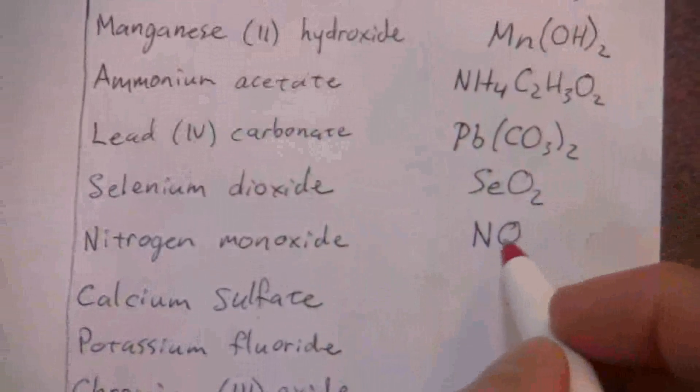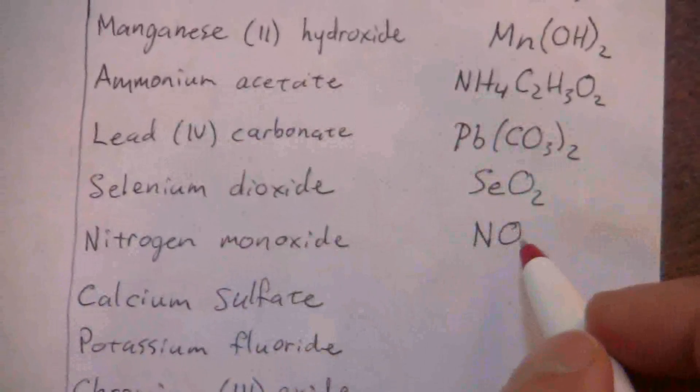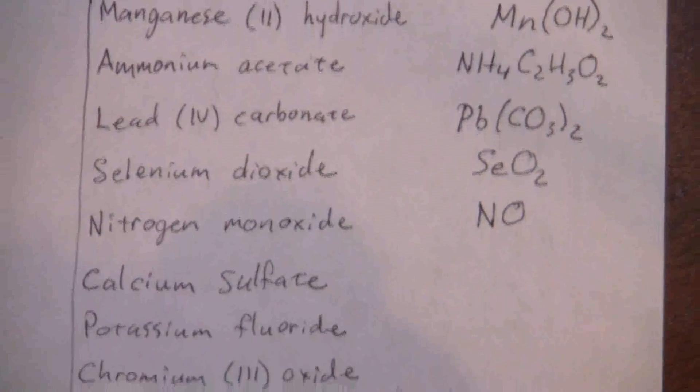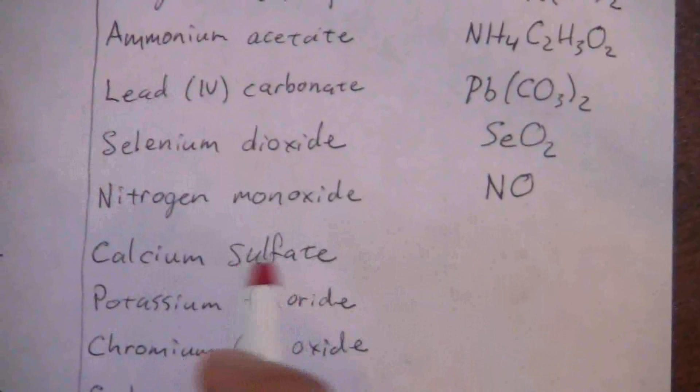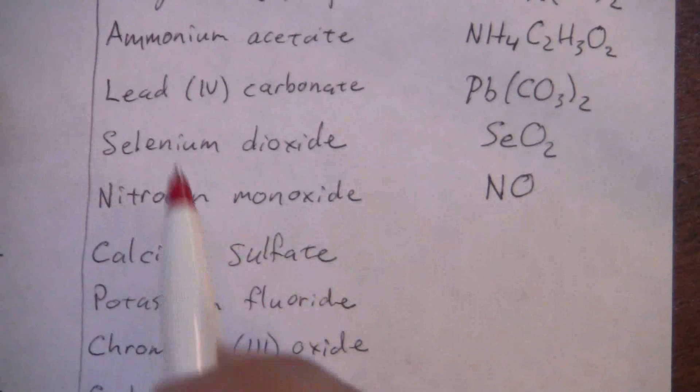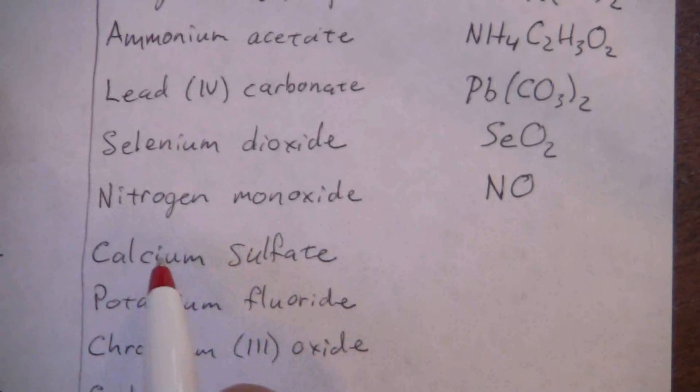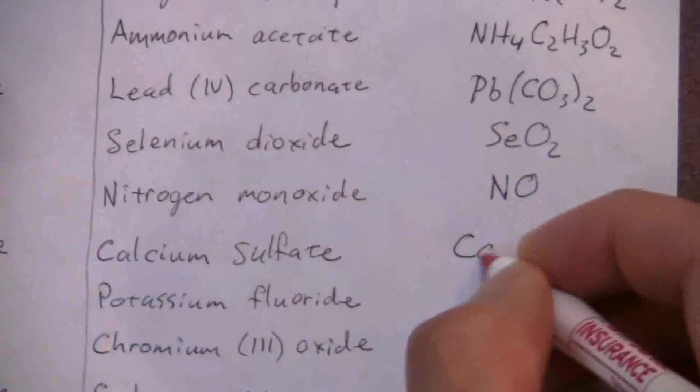Calcium sulfate - we know sulfate is SO4 with a negative two charge. Calcium is an alkaline earth metal, so it's in that second column and has a positive two charge. Calcium with positive two, sulfate with negative two - they balance out one to one: CaSO4.